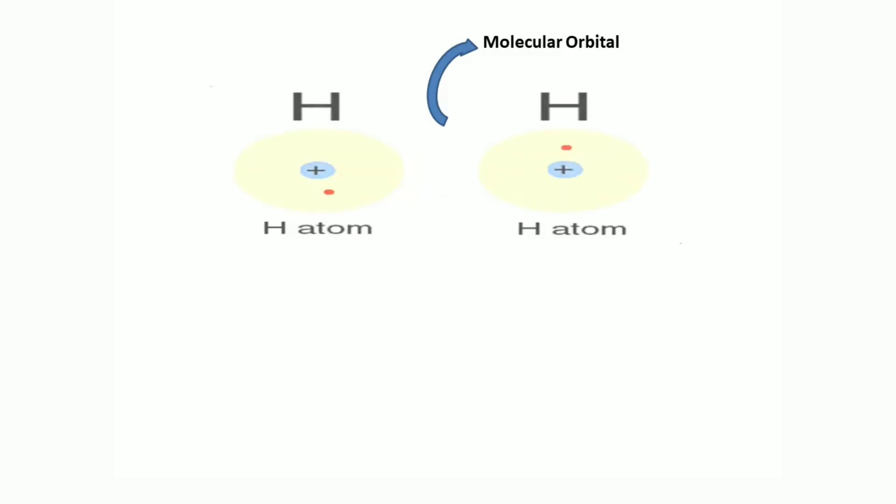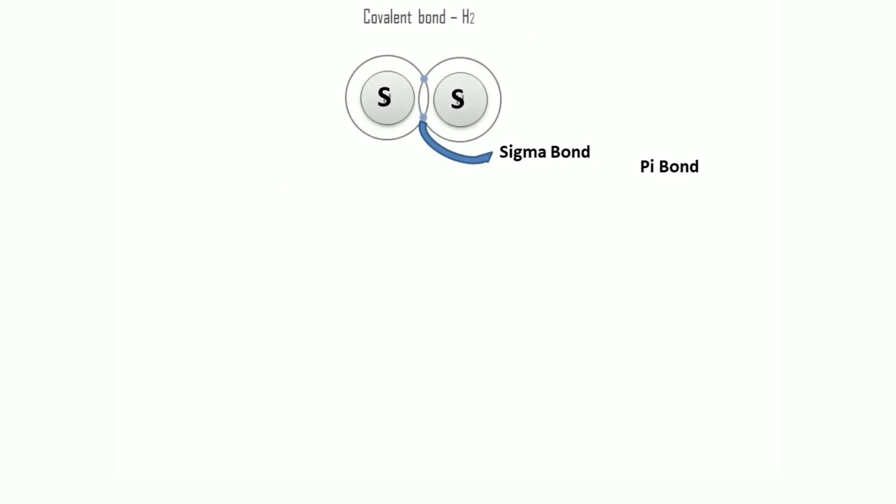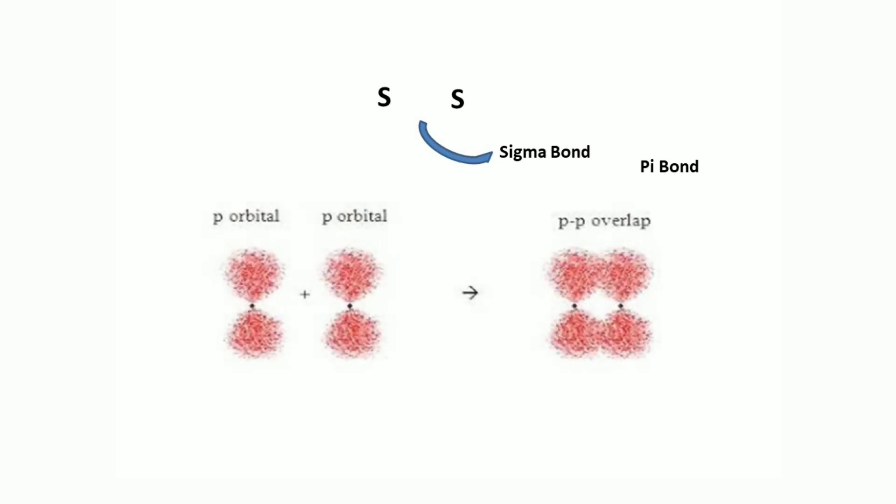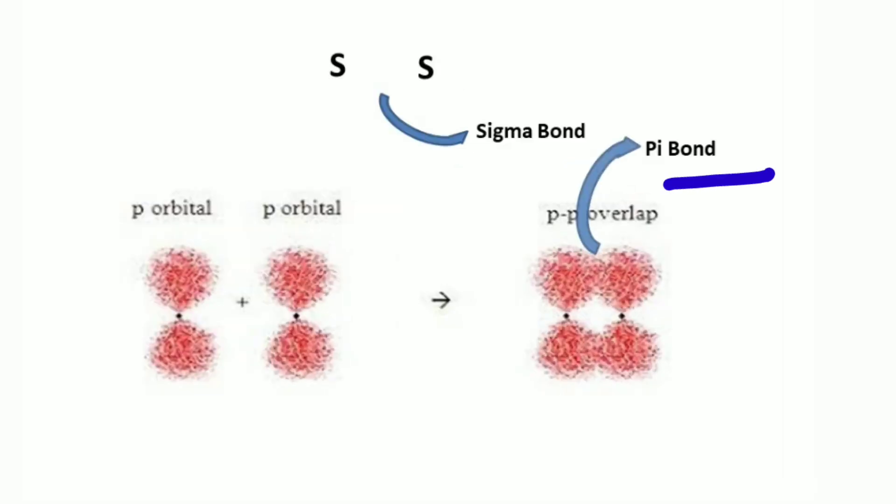The overlapping position is known as a molecular orbital. If the overlap is face to face, it's called a sigma bond, but if the orbital overlapping is side to side, it's known as a pi bond.